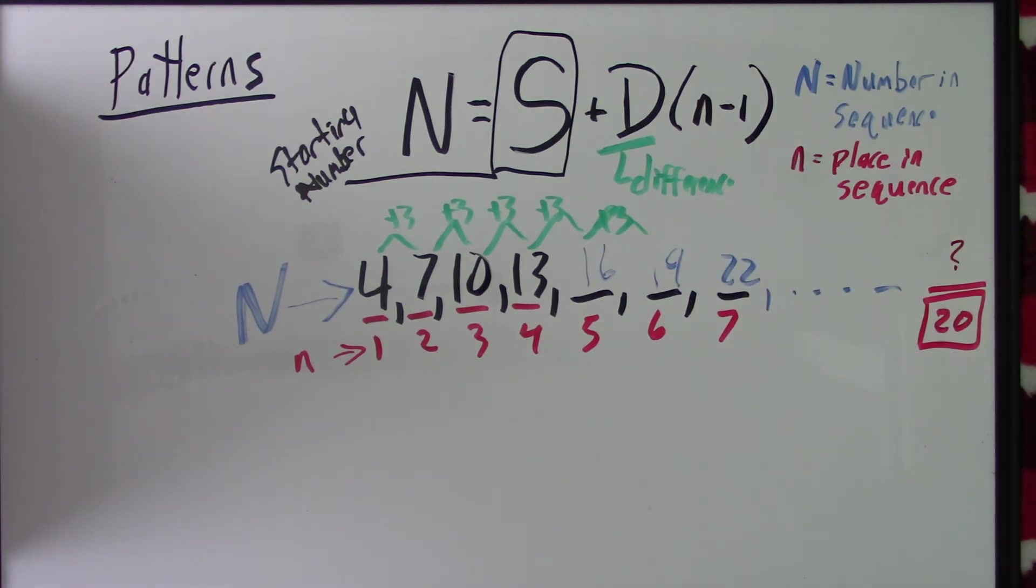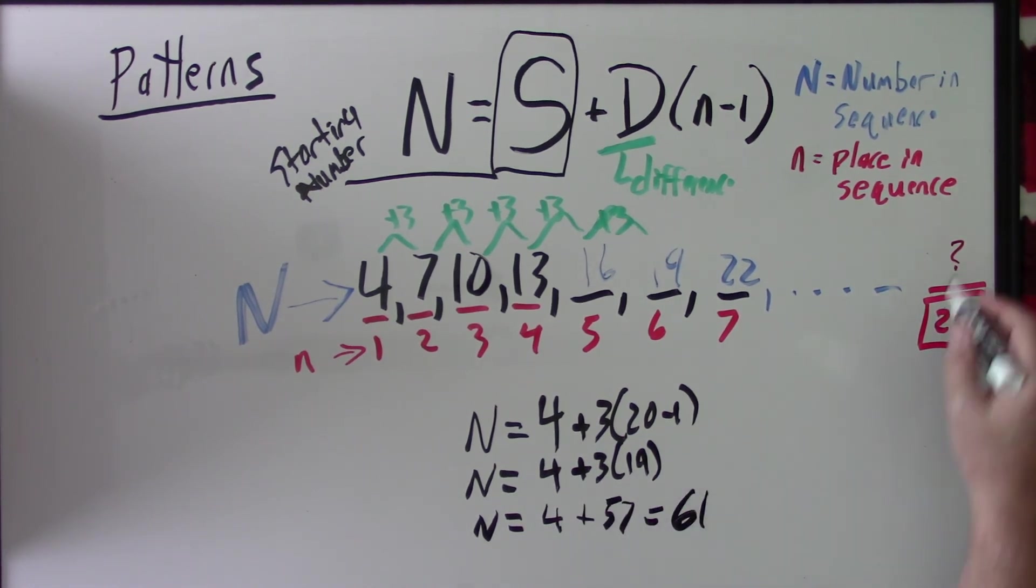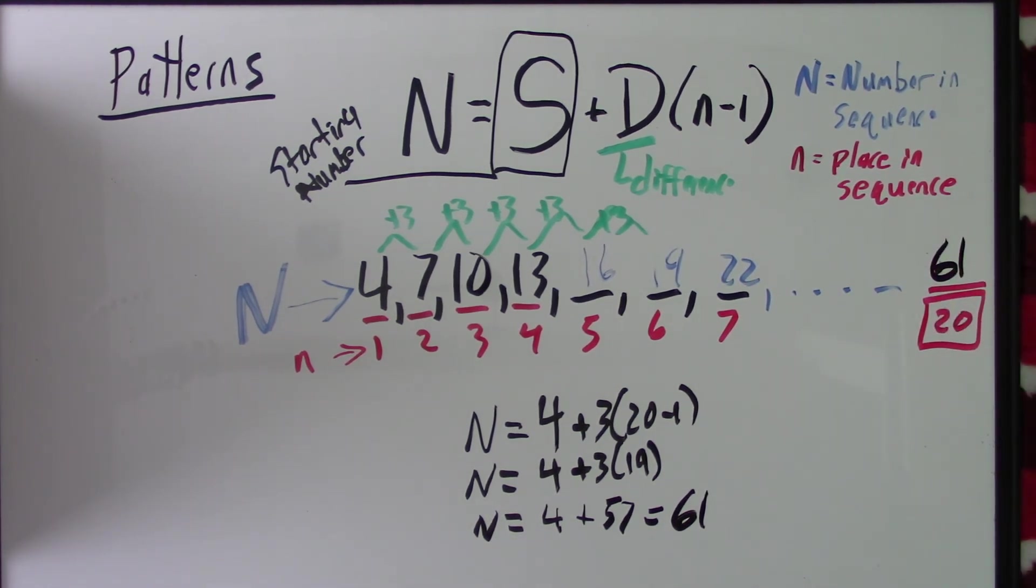So, the 20th number should be N is equal to, I'm starting at 4. I'm adding 3, 20 times, but I'm going to subtract 1. So, I'm starting at 4, and I'm adding 3 times 19, because I'm adding 19 threes to get to the 20th number. So, N is equal to 4 plus 3 times 19 is 57. So, that's 61. So, the 20th number is 61.